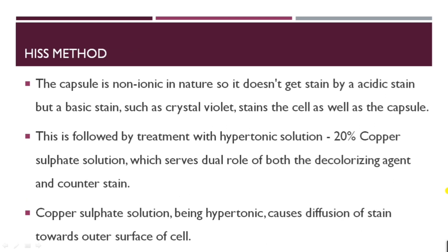In His method, since the capsule is non-ionic in nature, it does not get stained by an acidic stain but by a basic stain. The basic stain used is crystal violet, which stains the cell wall as well as the capsule. This is followed by treatment with a hypotonic solution — that is, 20% CuSO4 (copper sulfate) — which serves the dual role of both decolorizing and acting as a counter stain. The copper sulfate solution, being hypotonic, causes the diffusion of stain towards the outer surface of the cell.